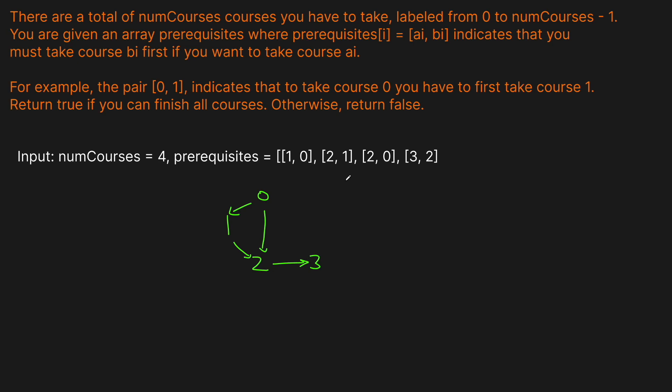For this question we don't actually care about the ordering, so why use topological sort instead of plain DFS? First, topological sort is a DFS. Second, there's a follow-up problem called Course Schedule 2 where we do need the order. Rather than learning two separate algorithms, we can use topological sort for both — the code is literally the same, except here we return true or false instead of the actual order.